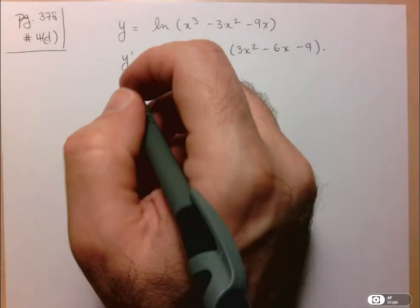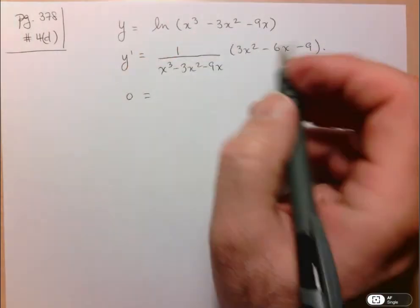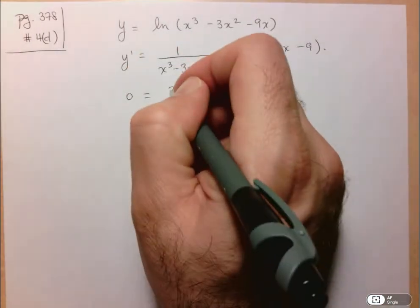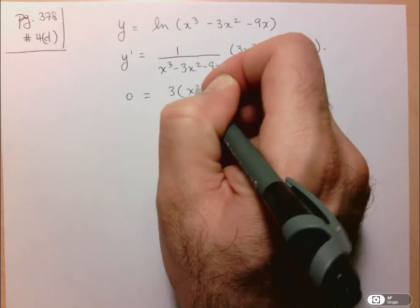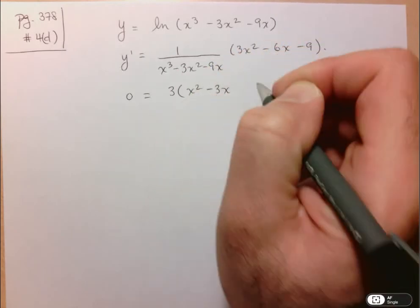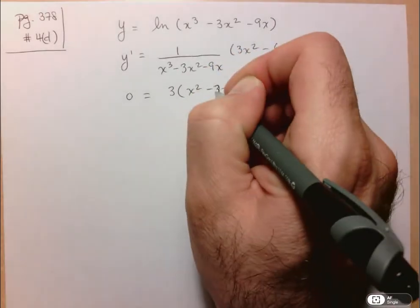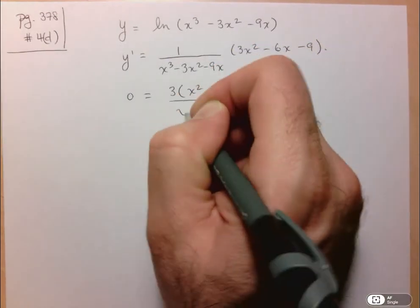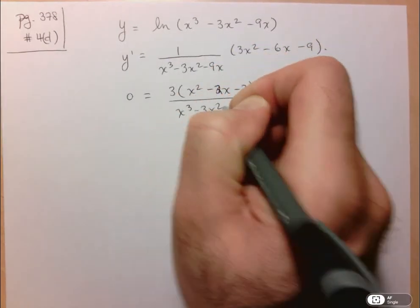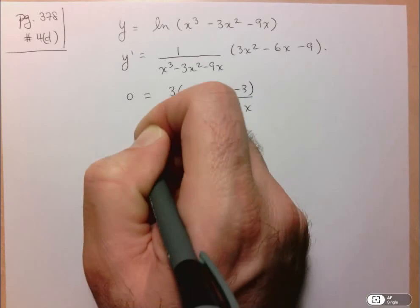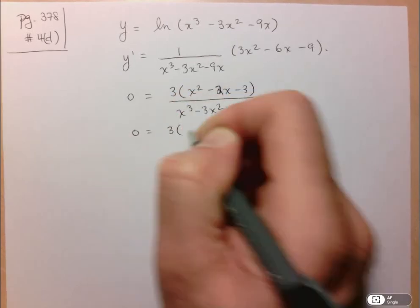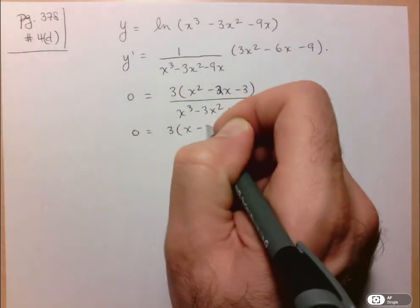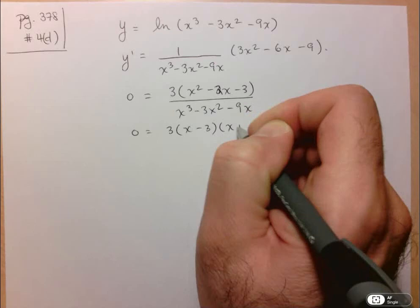And we have to determine when that derivative is equal to 0. So I'll factor the numerator here. So 3 and that gives us x² - 2x - 3. And let's keep going here. We've got 3 and this factors nicely to (x - 3) and (x + 1).